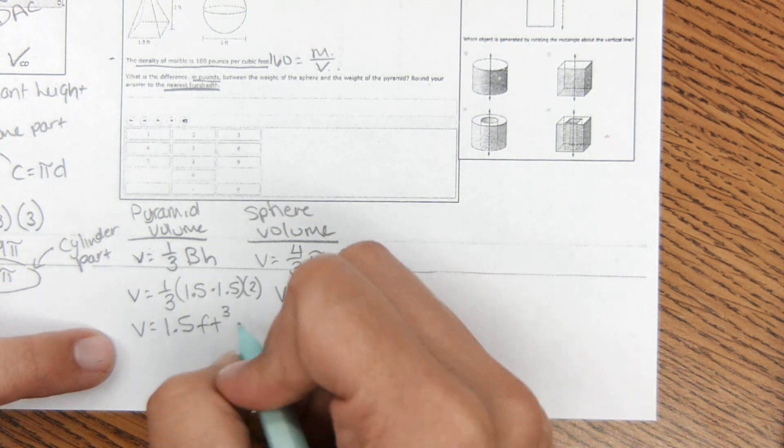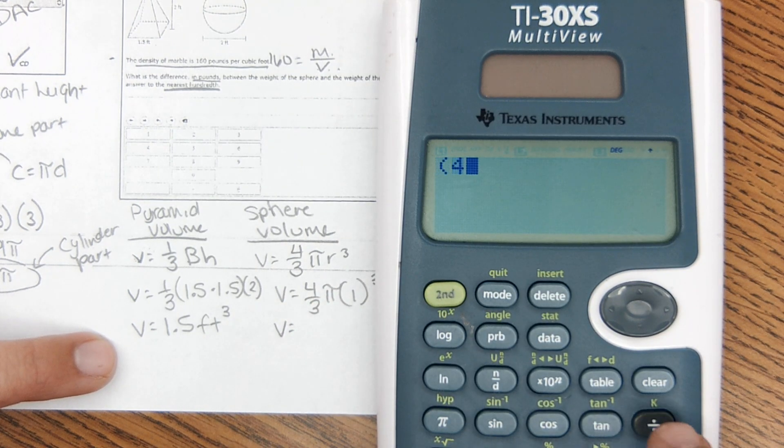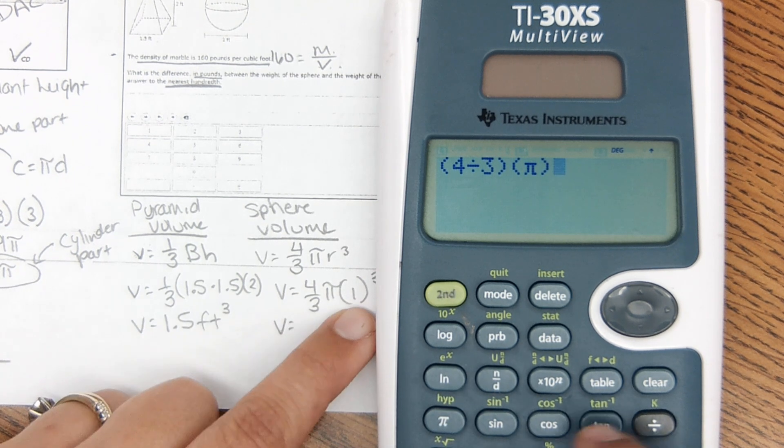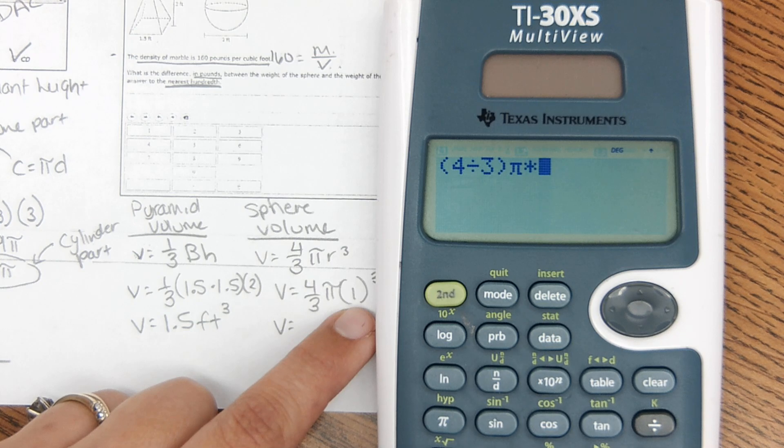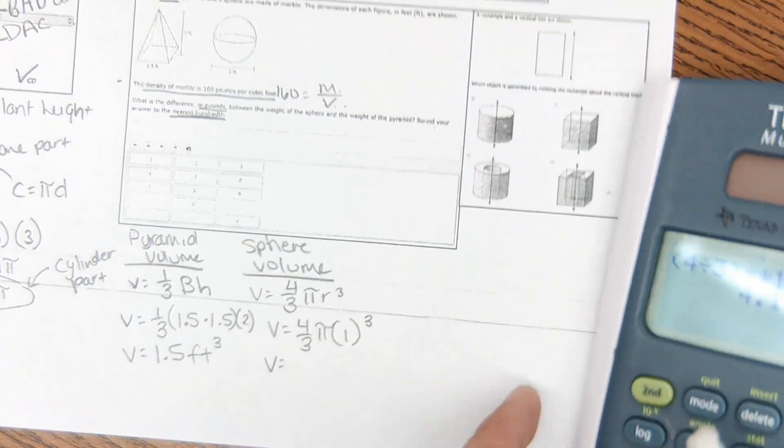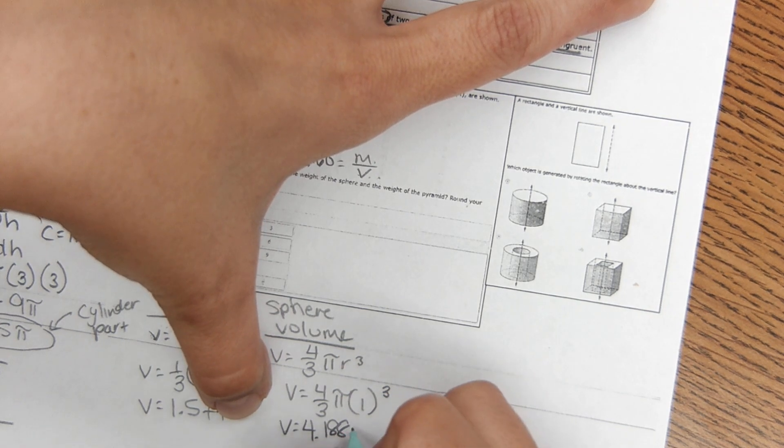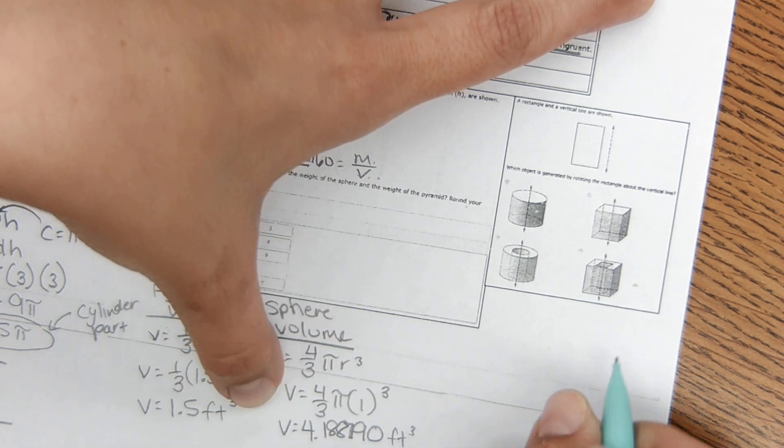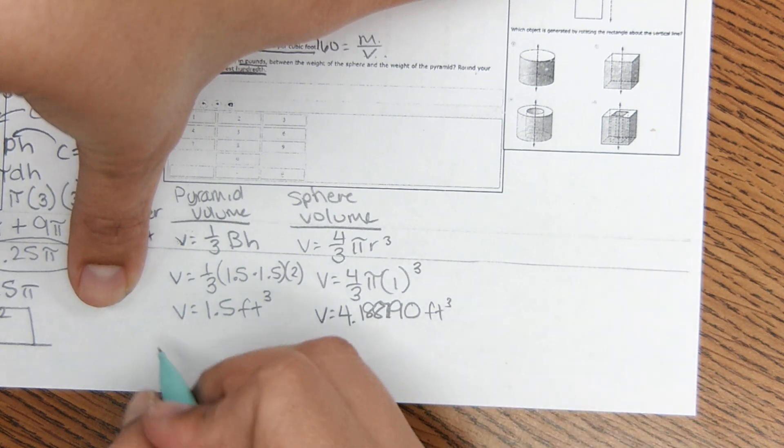And then volume of the sphere. 4 divided by 3 times pi. 1 cubed, 1 times 1 times 1 is just 1. What did I just do? Sorry. Pi times 1 is this number. I'm going to try not to round it too much. 4.188790.